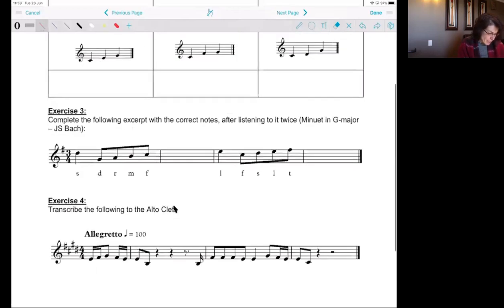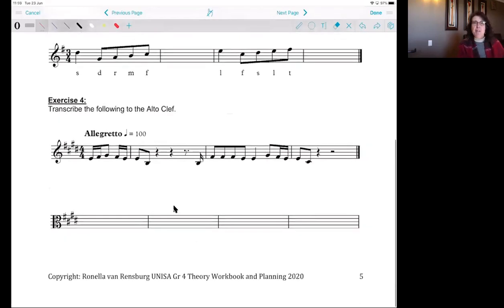Then the following exercise: transcribe the following to the alto clef. Very important to remember is that you need to know where middle C is and be able to transcribe it. Transcribe means that you have to rewrite it on the same pitch as what it sounds like. On this one clef must be the same pitch in the other clef. So if you think in the G clef middle C is there, and in this clef middle C is there, so that's the same note.